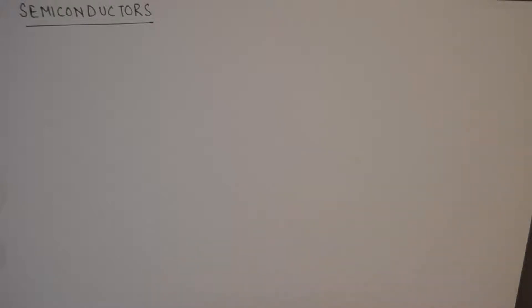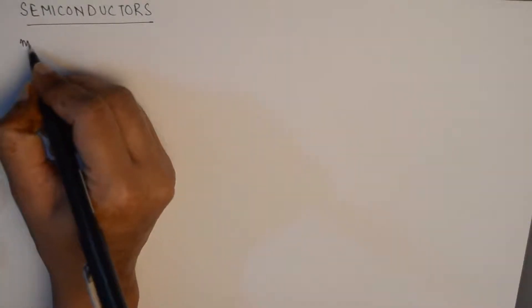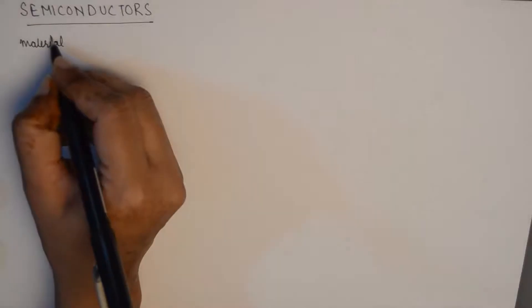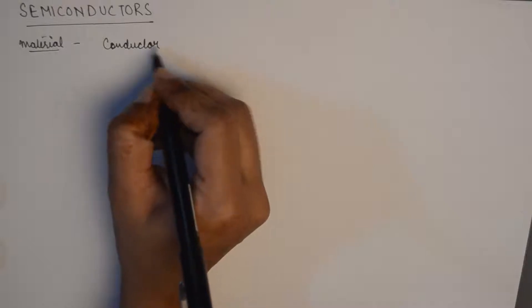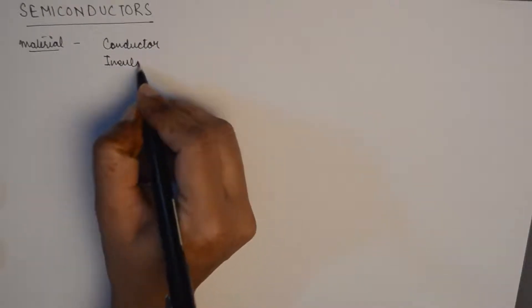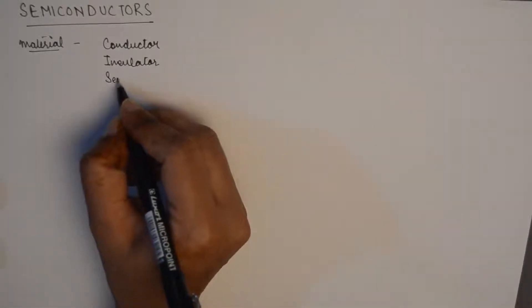Hello everyone, welcome to a new tutorial in this series of basic electrical and electronics engineering. Today we will understand about the different types of materials and how they are classified, and we will talk about semiconductors in a little bit of detail. Materials can be classified into three different categories based on their conductivity: a conductor, an insulator, or a semiconductor.